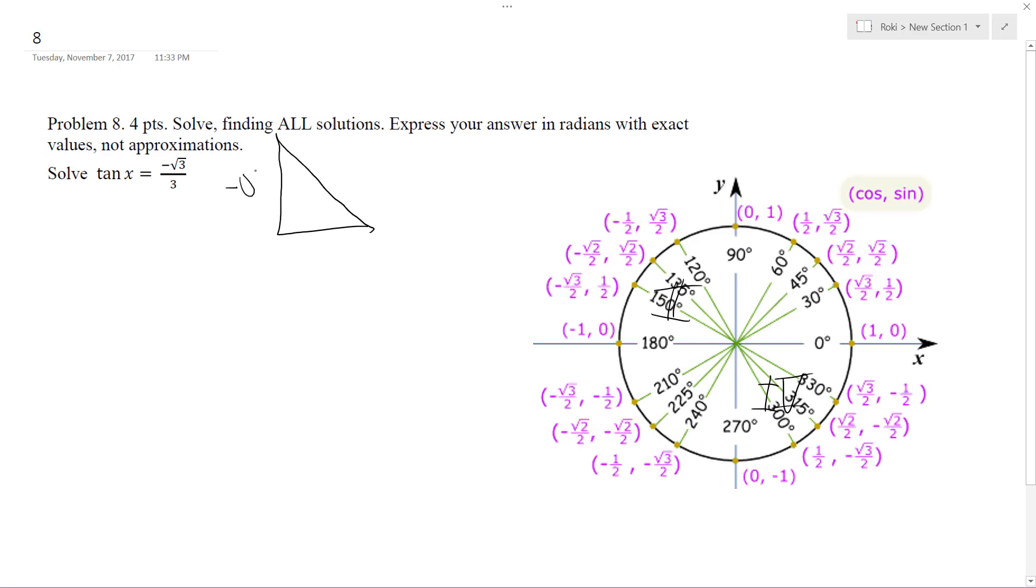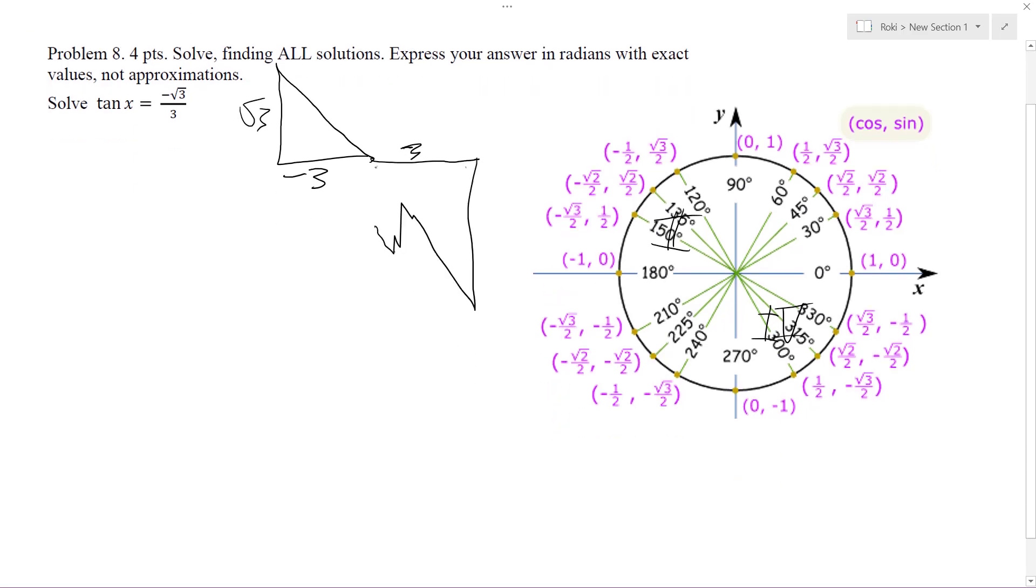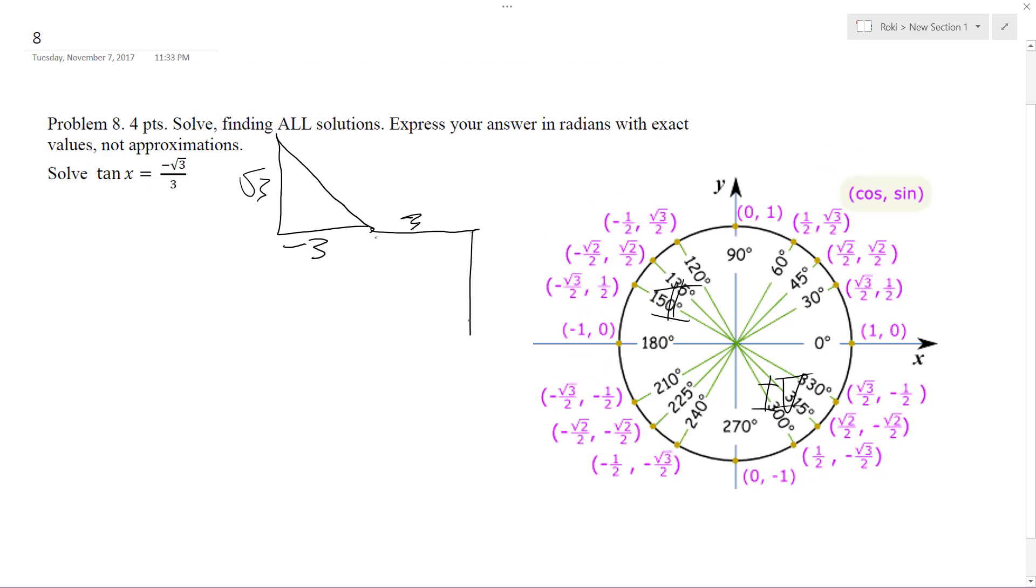Opposite over adjacent, so negative root three over three. And then over here... I keep getting these wrong. All right, this is three, negative root three. Three plus nine equals square root of 12, which is equal to two root three. But that doesn't matter.